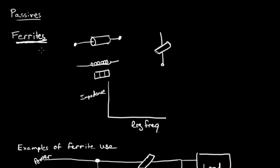In this video I'm going to talk about a class of passive components called ferrites. Ferrites are a non-conductive ceramic that also happens to be ferromagnetic.